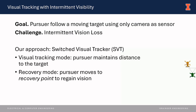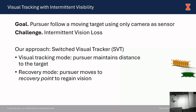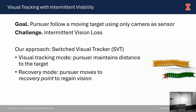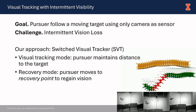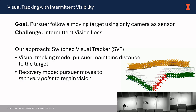We tackle this challenge by designing the Switched Visual Tracker, SVT. The SVT is a mode-switching controller. In the visual tracking mode, the pursuer can see the target and is maintaining distance to the target. When the pursuer loses visual contact with the target, as shown in the animation, it will switch to the recovery mode and perform a maneuver to regain vision. After regaining vision, the pursuer can switch back to the visual tracking mode and keep tracking the target.